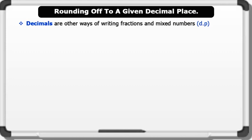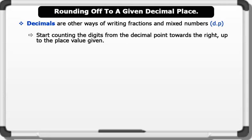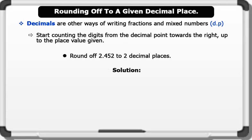Decimals are another way of writing fractions and mixed numbers. When rounding off to decimal places, we start counting the digits from the decimal point towards the right up to the place value given. Let's see an example: round off 2.452 to two decimal places.